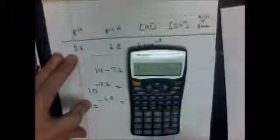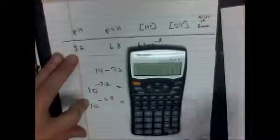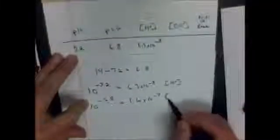Conversely, we do the same thing for OH⁻: 10 to the minus pOH, which is minus 6.8. We go second-F 10^x, enter 6.8, change the sign, hit equals, and we get 1.6 times 10 to the minus 7 — that is our OH⁻ concentration. For acid or base: if the pH is greater than 7, it's basic; less than 7, it's acidic; exactly 7, it's neutral. Here pH = 7.2, which is greater than 7, so it is basic.